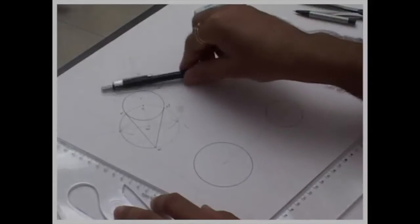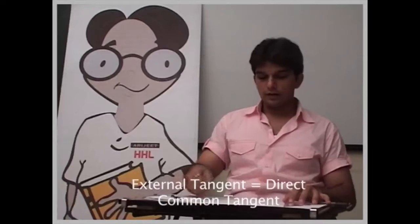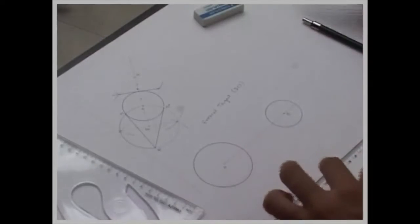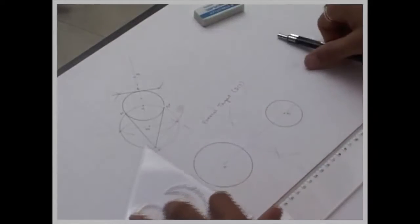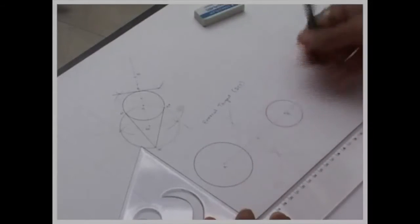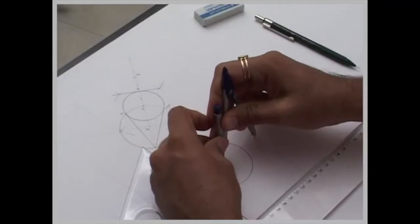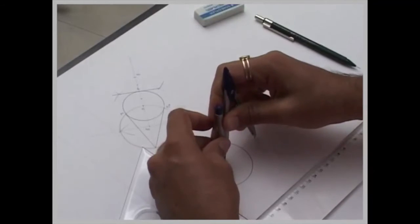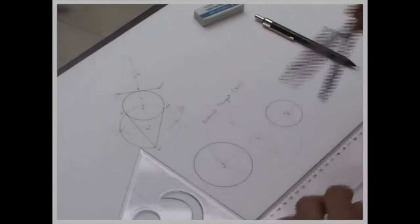Now I want to draw external tangent, that is called direct common tangent. Now in this case what we will do? First we will bisect AB. We will draw circle to A. This is called mid circle.